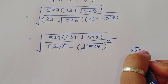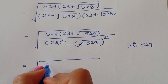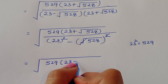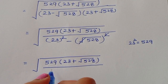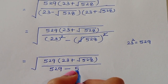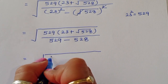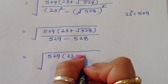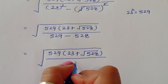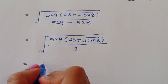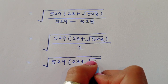Since 23² equals 529 and (√528)² equals 528, the denominator becomes 529 minus 528, which equals 1. So the whole expression becomes √529 times (23 plus √528) divided by 1, giving us √529 times (23 plus √528).